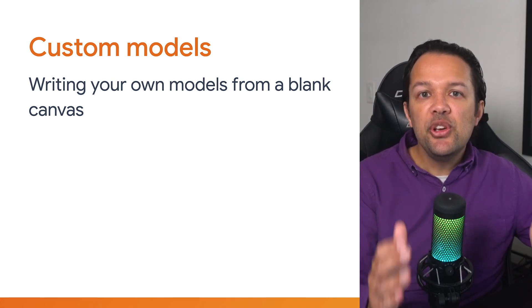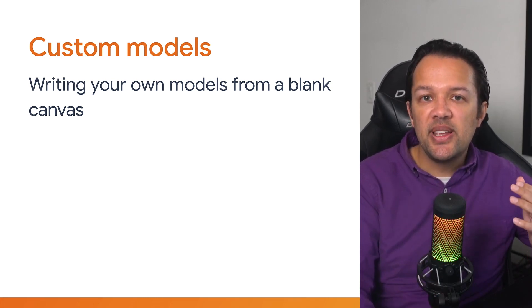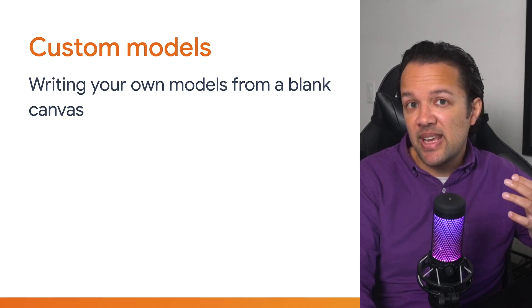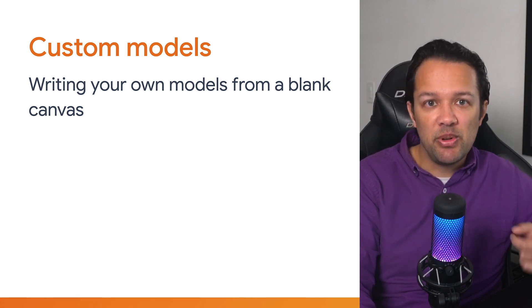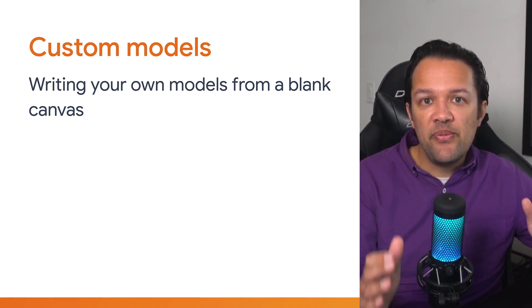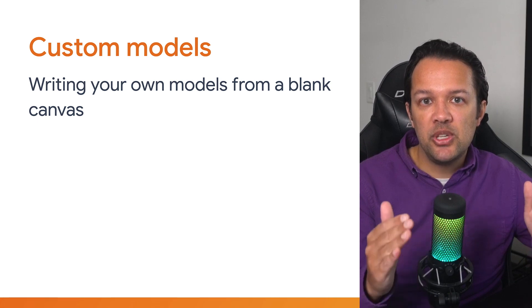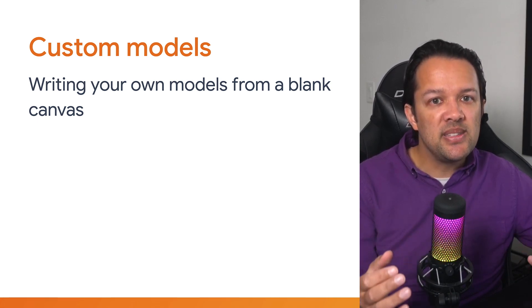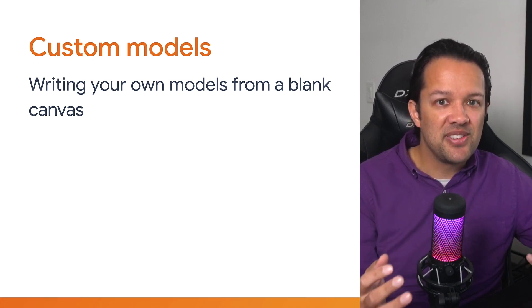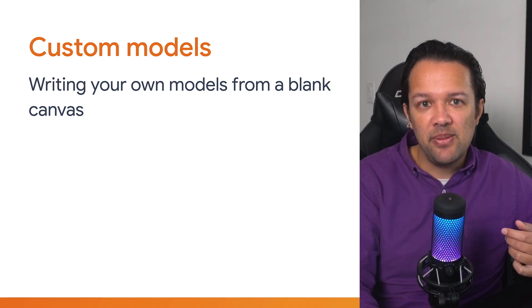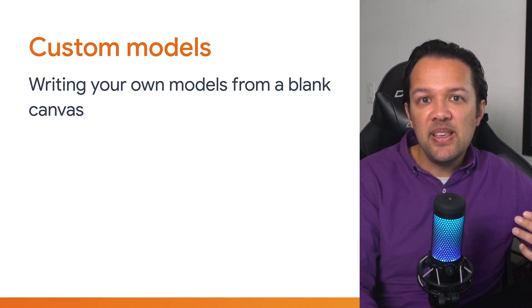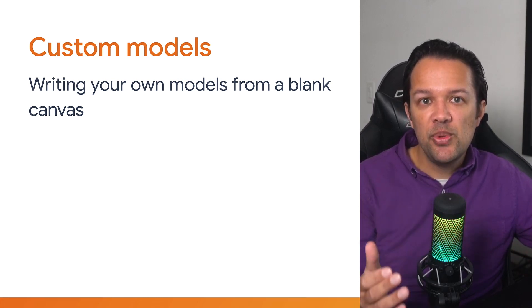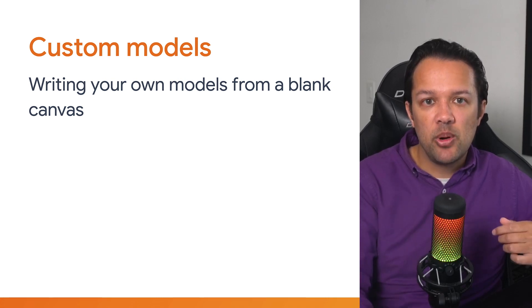Finally, you can choose to create your own models starting with a completely blank canvas, using the TensorFlow.js APIs you saw before. This is useful when there's no existing model type that's suitable for your task at hand, or maybe the ones that do exist are not fast enough or take up too much memory. In this case, you can try to write and then train your own model architectures that can solve these problems.